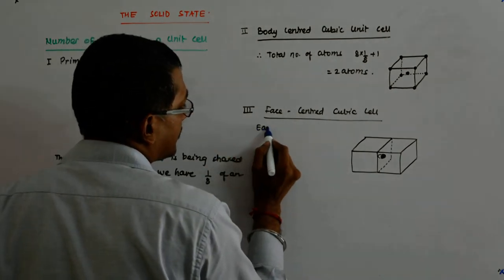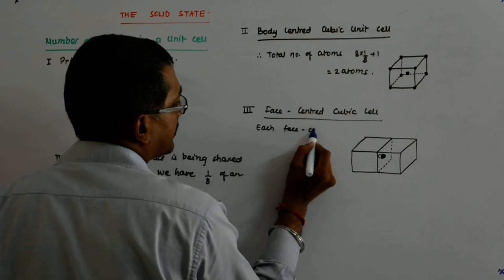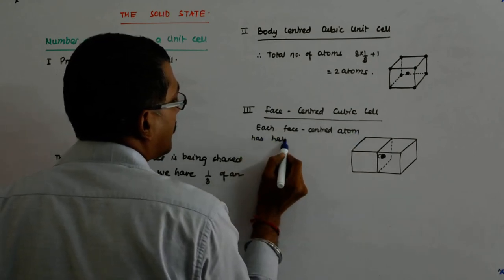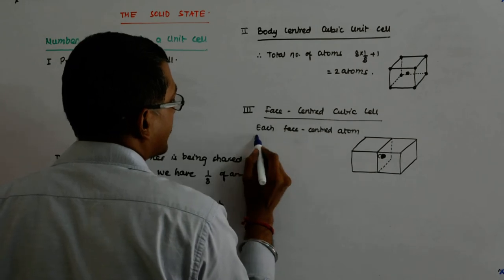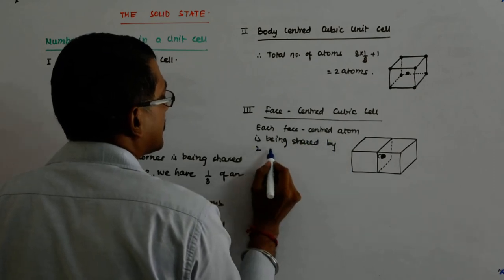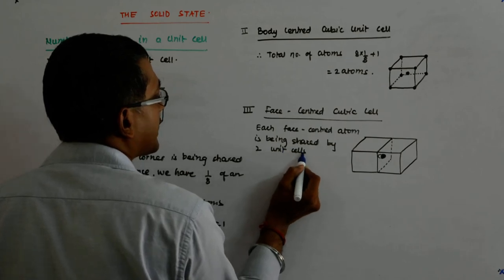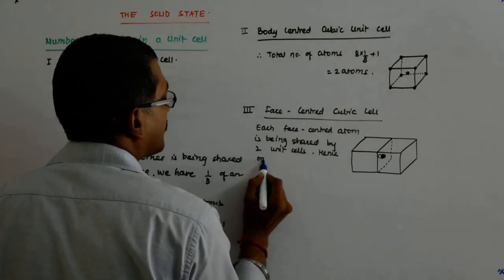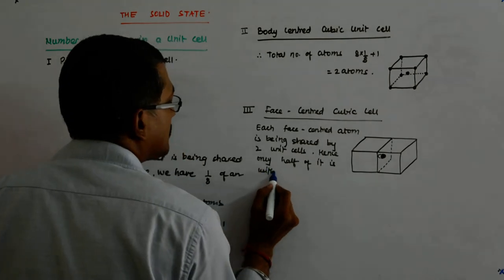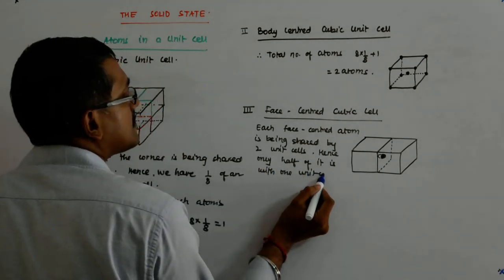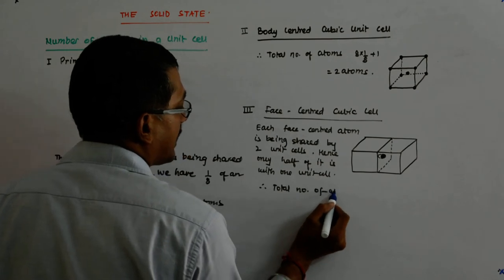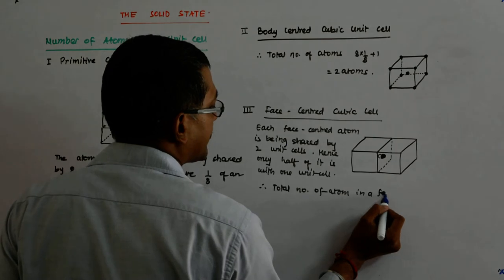Each face-centered atom has half of it being shared by two unit cells. Hence, only half of it is with one unit cell. So, therefore, the total number of atoms in a face-centered cubic cell...